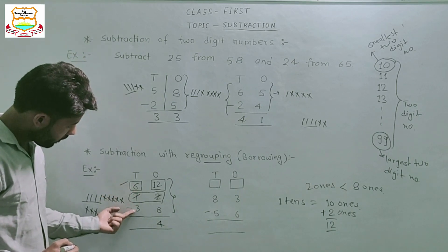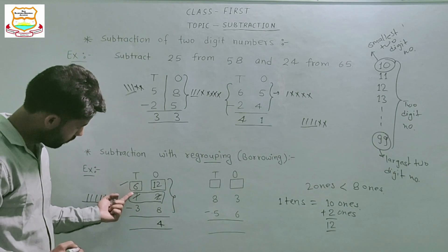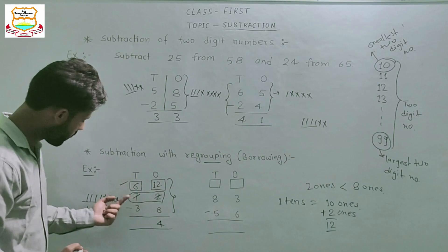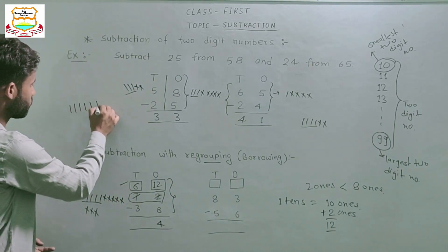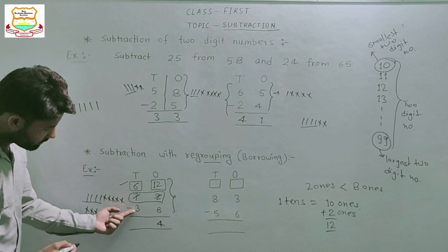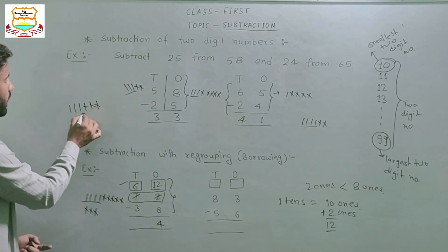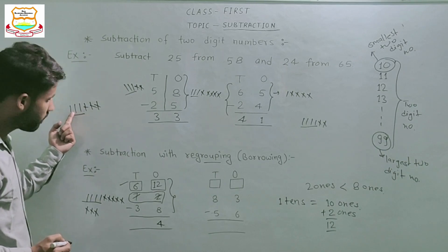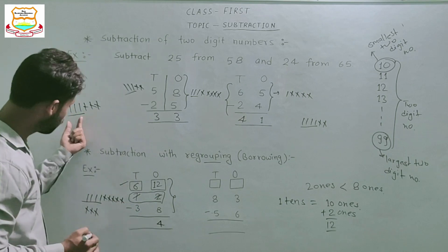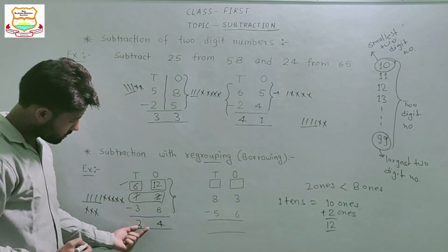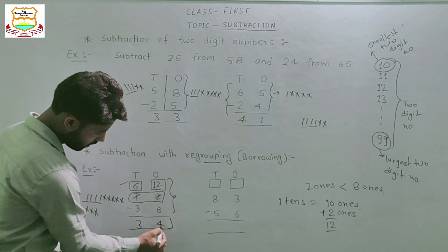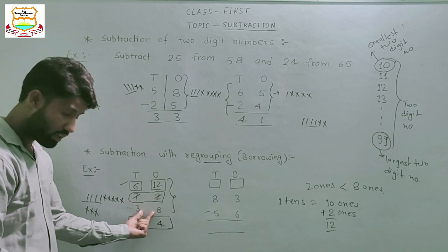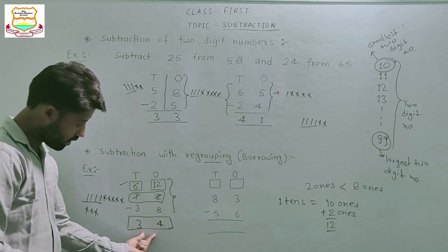Same process in the tens column: subtract 3 from 6. Draw 6 sticks, cut 3 — 1, 2 and 3. Count remaining: 1, 2 and 3. Means 6 minus 3 equals 3. This is the result: 72 minus 38 equals 34.